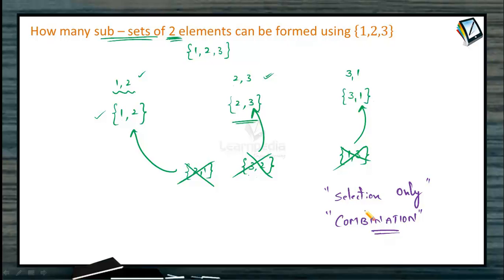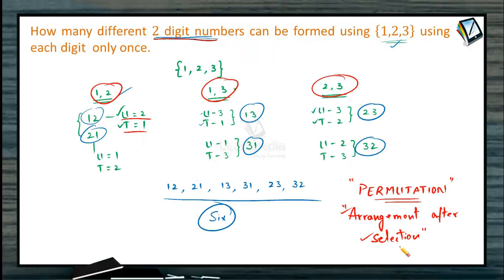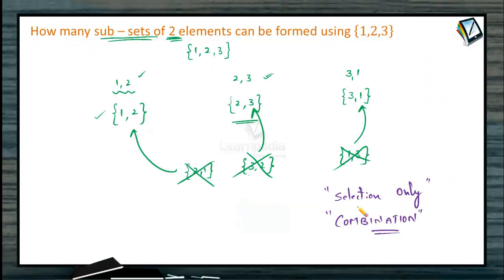In the previous example (two-digit numbers), we selected and then prefixed the positioning — that is arrangement. The arrangement combined with selection is called a permutation. Whereas only selection, with no arrangement, is called a combination.